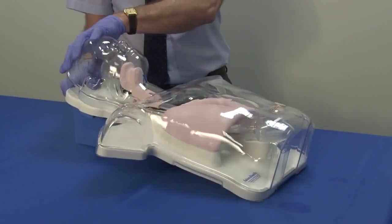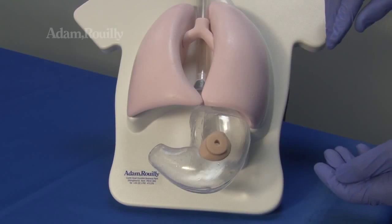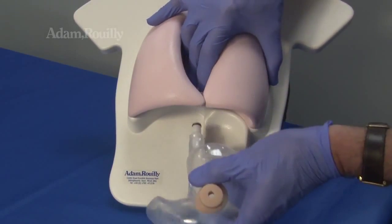After use, to clean or replace the stomach, remove the outer transparent cover. Press the grey quick-release button on the connector and pull the stomach downwards to remove.